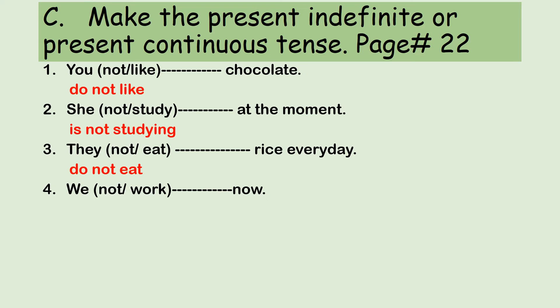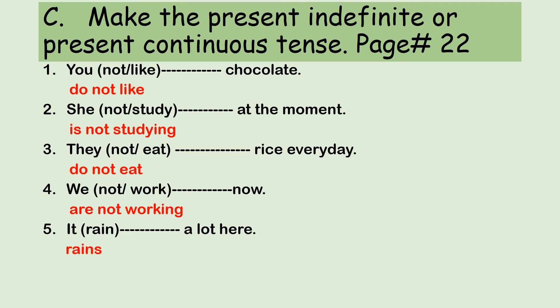We are not working now — now means at the moment, the action is happening, so we use are with not and add -ing to work. It rains a lot here — here is a general fact, so we use the first form of the verb, and since the pronoun is it, we add s to rain. So the answer is: it rains a lot here.